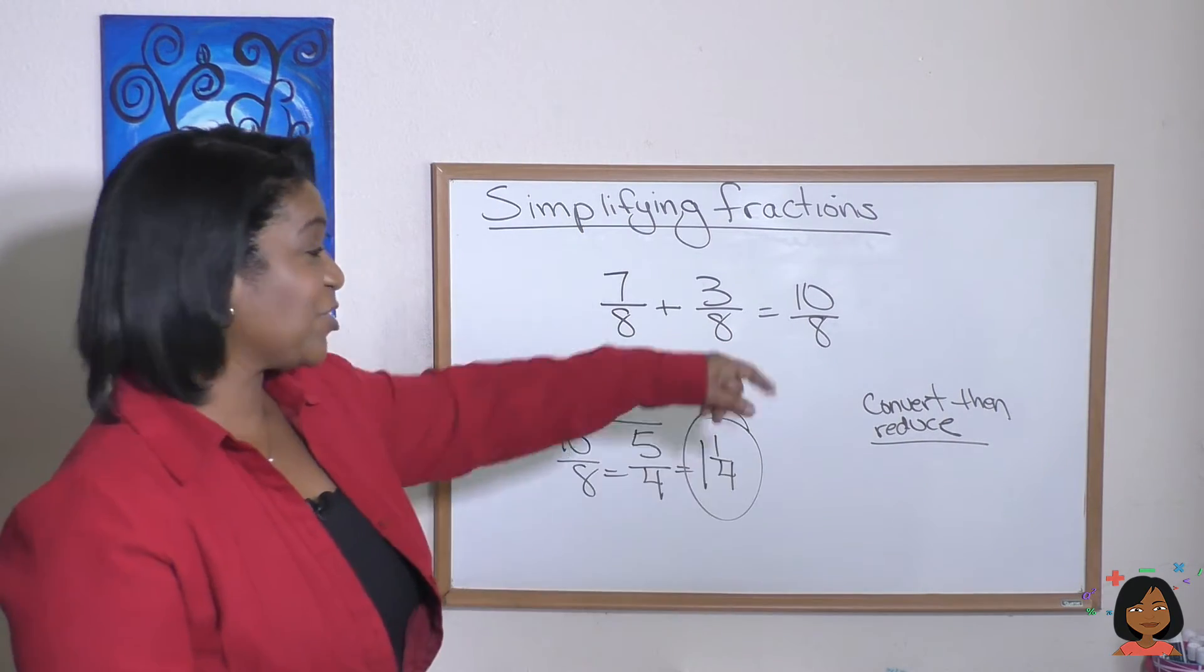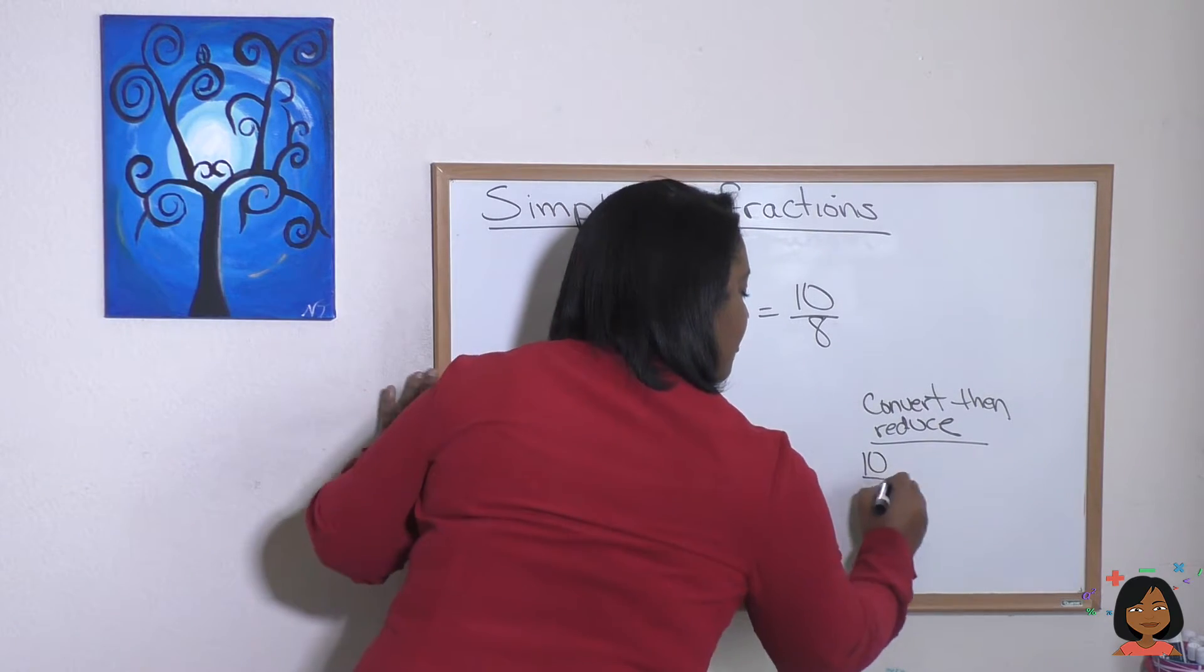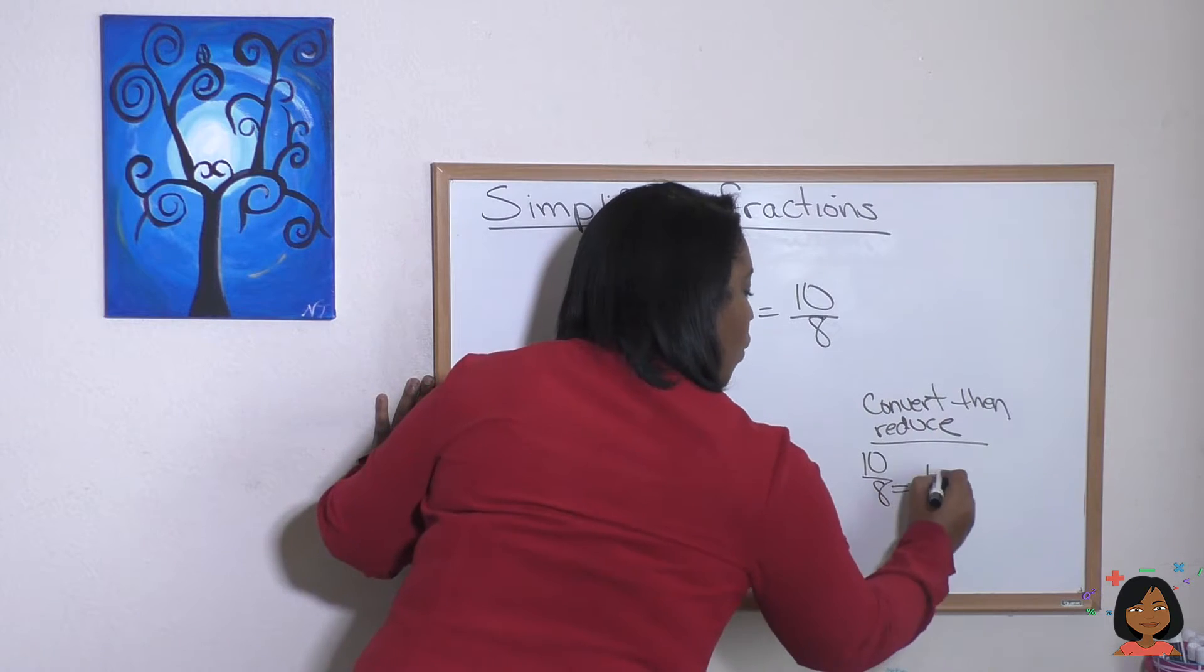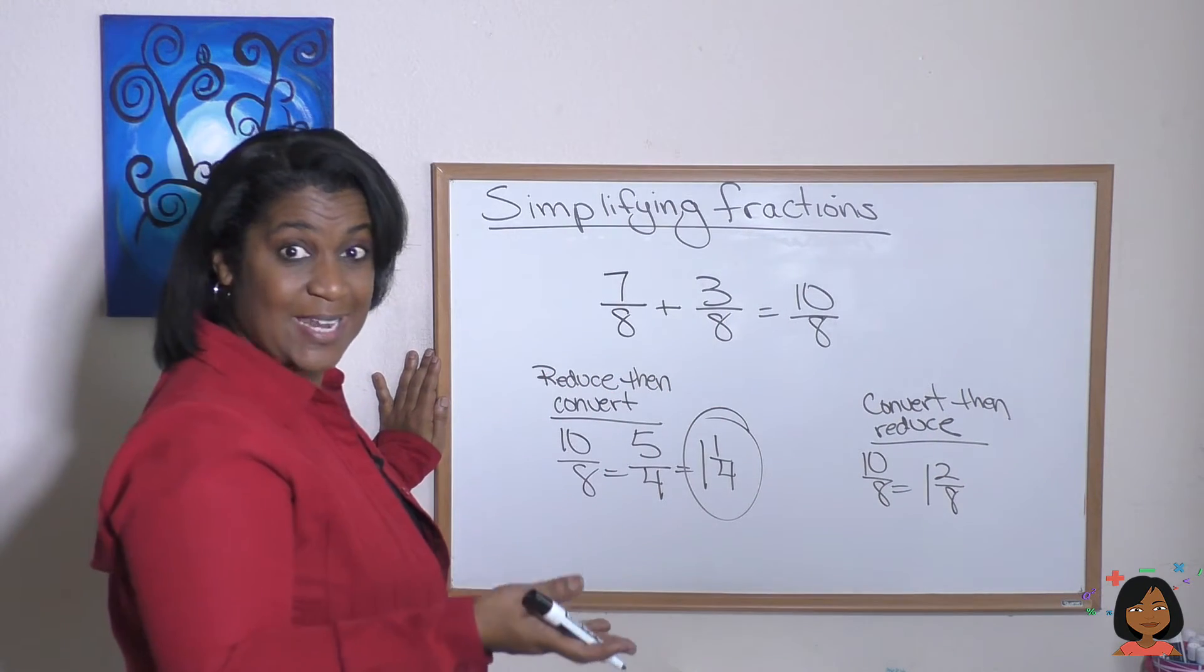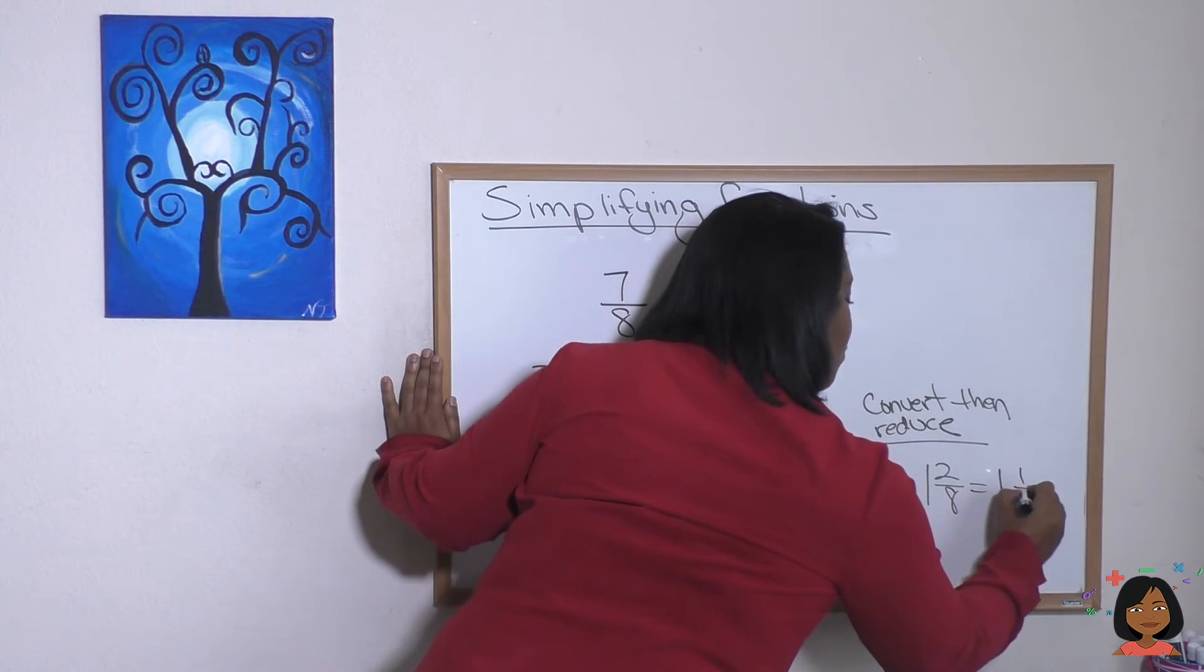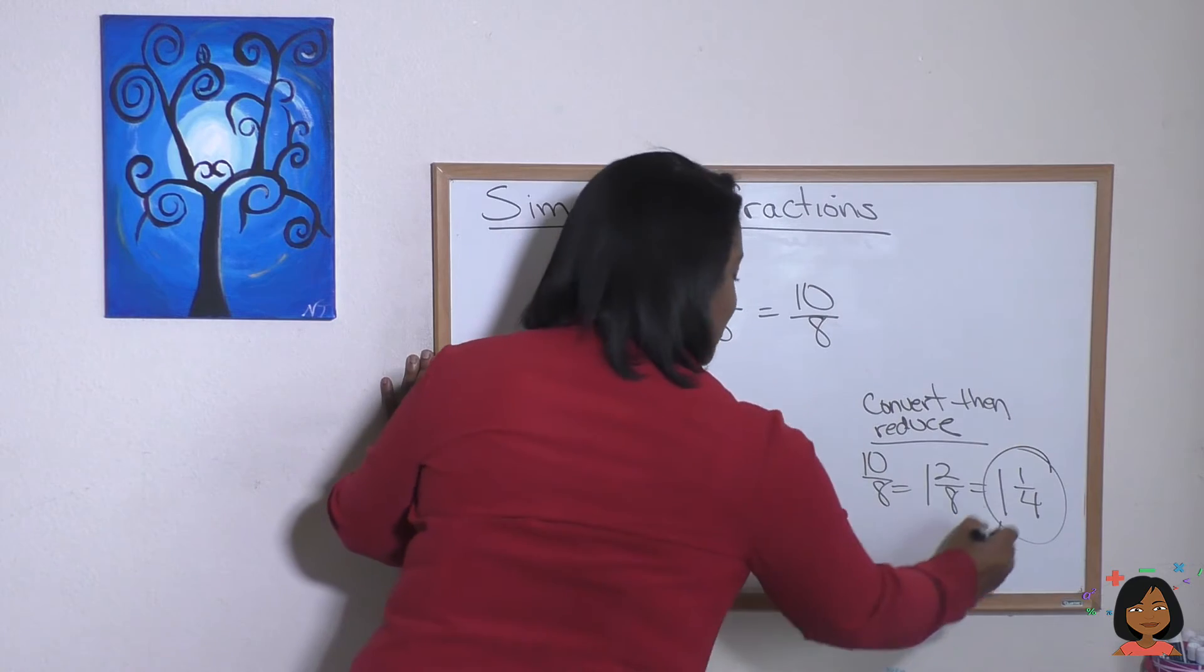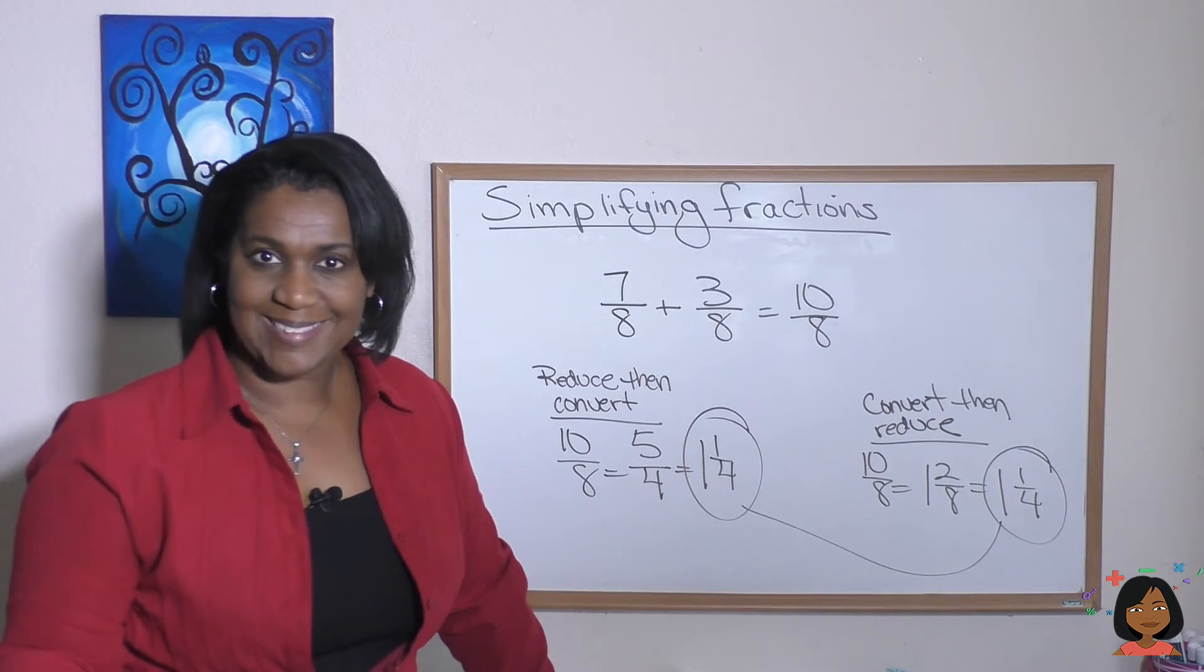Or we can try 10 eighths and convert it then reduce it. So 10 eighths converts to the mixed number one and two eighths. We know we can't keep two eighths as it is. We need to reduce that down to one and one fourth. And as you can see, our answers are the same. We just chose two different routes to get there.